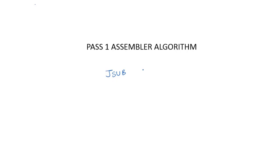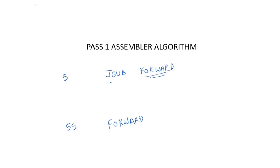But consider an instruction like 'jump to subroutine FORWARD', where FORWARD appears later in the program. If this jump instruction is at line 5 and the FORWARD label is defined at line 55, how could the assembler know the address of FORWARD while still processing line 5? This kind of problem is called a forward reference.